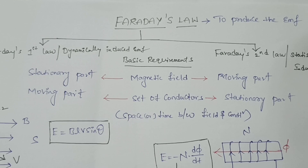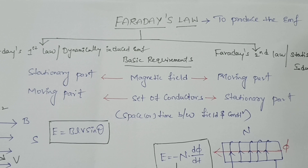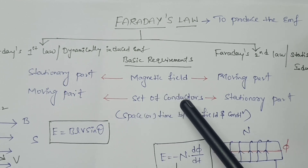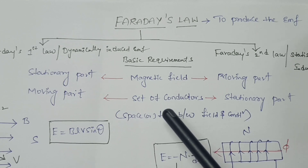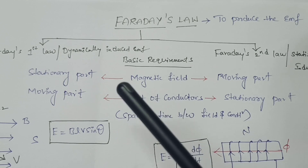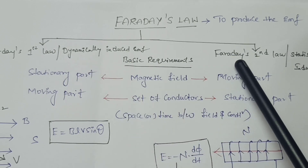Faraday's law is mainly used to find the induced EMF in any machine. According to Faraday's law, whenever there is a relative space or time variation between a magnetic field and a set of conductors, an EMF will be produced in the conductors — due to the effect of relative space variation or relative time variation.